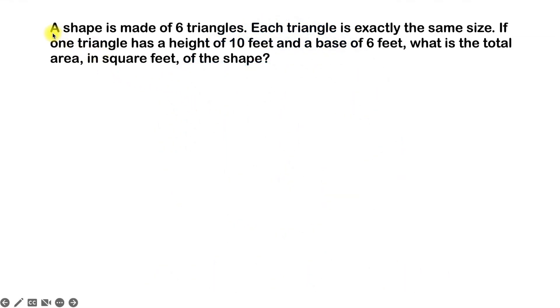This question says a shape is made of six triangles. Each triangle is exactly the same size. If one triangle has a height of 10 feet and a base of 6 feet, what is the total area in square feet of the shape? So we know we have some shape and this shape has six triangles that make it up.